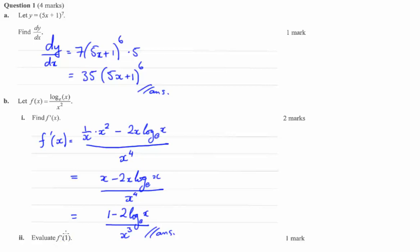Now here we want to evaluate f dash of 1. So let's substitute f dash of 1 into here. So we have 1 minus 2 times the natural log of 1 over 1 cubed.